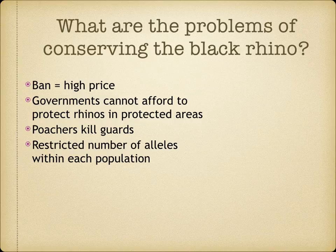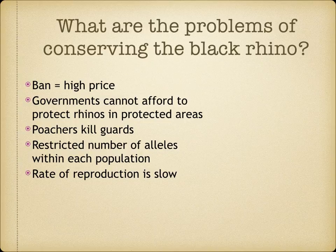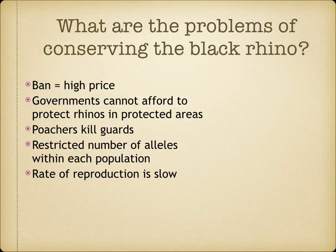For the species to survive, there is a need to increase genetic variability. This could be done by moving one rhino from one area to another, but some subspecies of rhino are adapted to their own local environment. Finally, the rate of reproduction is slow — females only have their first calf when they are 6 to 7 years old, the gestation period is 419 to 478 days, and there is an interval of 2 to 3 years between calves, making an increase in population very slow.